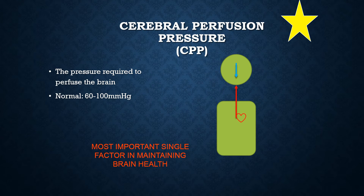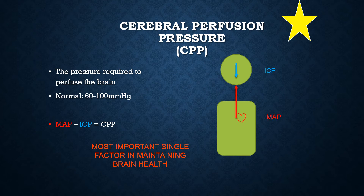Now we understand the definition of ICP and how this impacts our brains and perfusion to brain tissue. One of the biggest reasons we are concerned about ICP is because we want to make sure our brains are getting perfused with blood. We can measure how well our brains are getting perfused by calculating what's called cerebral perfusion pressure, or CPP. The CPP number is basically the amount of pressure that is perfusing the brain, and a normal CPP is between 60 and 100 millimeters mercury. Basically, we take the amount of pressure being delivered to the brain and subtract the amount of pressure in the brain — the pressure that is pushing back. The amount of pressure being delivered to the brain is our mean arterial pressure. The pressure pushing back against our MAP is the pressure in our skulls, or the ICP.